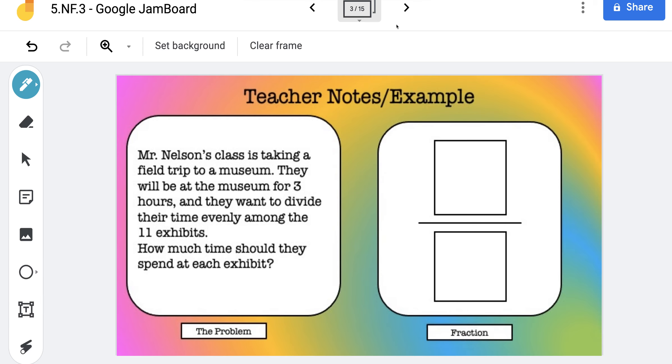Okay, so for the next problem it says Mr. Nelson's class is taking a field trip to a museum. They will be at the museum for three hours, and they want to divide their time evenly among 11 exhibits. How much time should they spend at each exhibit?